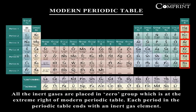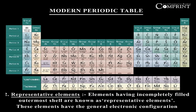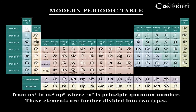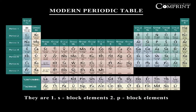Each period in the periodic table ends with an inert gas element. Representative elements: elements having incompletely filled outermost shell are known as representative elements. These elements have the general electronic configuration from NS¹ to NS² NP⁵, where N is the principal quantum number. These elements are further divided into two types: S-block elements and P-block elements.